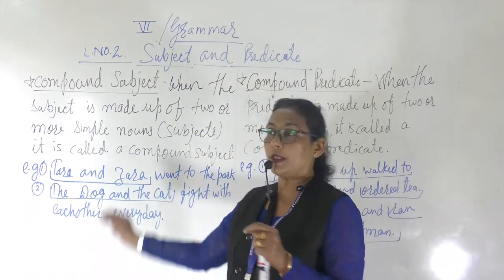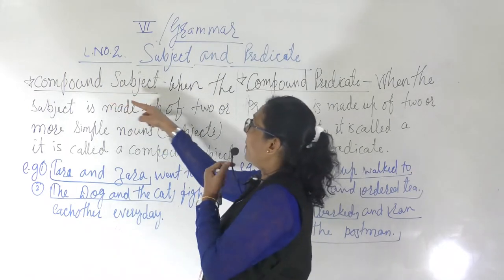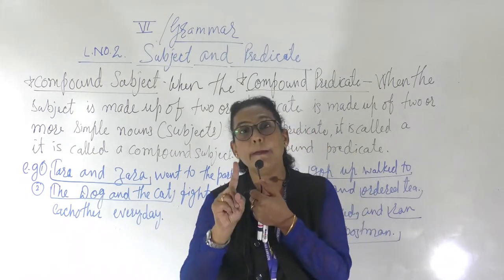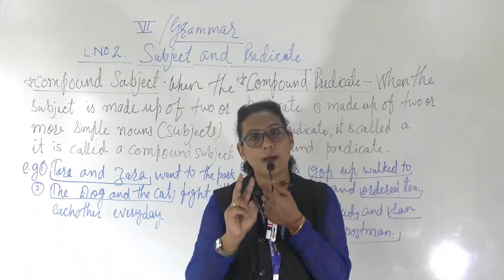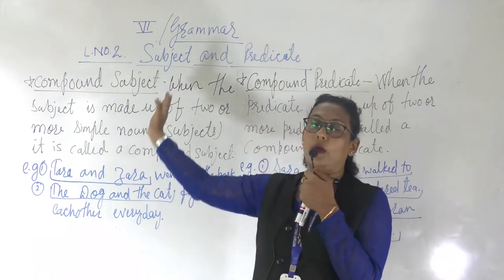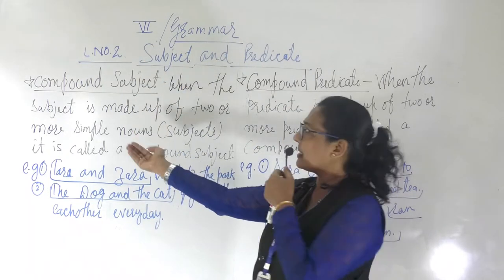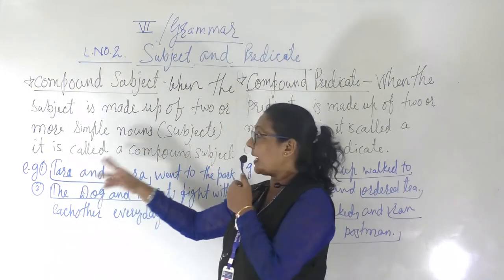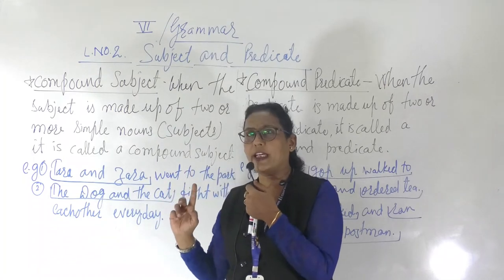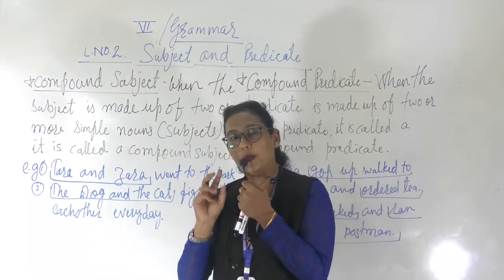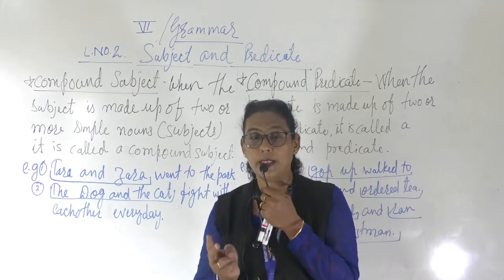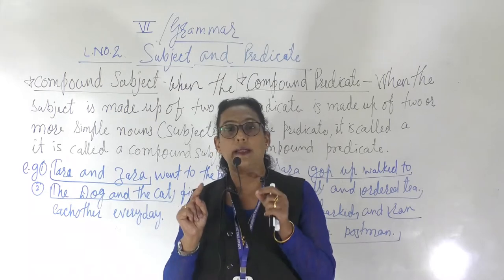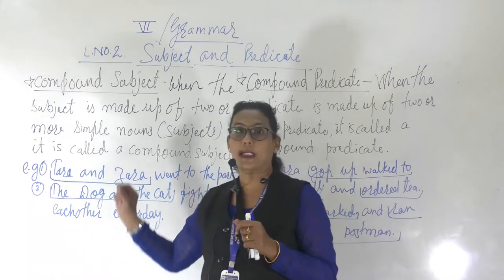What is the definition of compound subject? When the subject is made up of two or more simple nouns or subjects, it is called the compound subject. It is very easy. We have learned subject and predicate clearly. Here the difference is that when two or more nouns come together as the subject, that is called the compound subject.